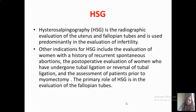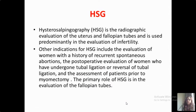HSG is the radiographic evaluation of uterus and fallopian tubes, predominantly used in the evaluation of infertility. But apart from that, HSG is also used in the evaluation of women with a history of recurrent spontaneous abortions, post-operative evaluation of women who have undergone tubal ligation or reversal of tubal ligation to assess patency, and even after myomectomy — before and after — to know the size of the cavity. The primary role of HSG is in the evaluation of fallopian tubes.